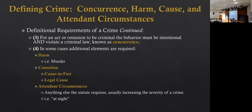Cause in fact goes all the way back — anything attached to a chain is a cause in fact. What we look for is legal causation: whether the crime was reasonably foreseeable. Whether your actions were reasonably foreseeable to result in some kind of harm or crime. We assume people act as reasonable human beings 24/7 — we know this isn't true, but this is what we assume. A reasonably prudent person of average intelligence — that's the standard.